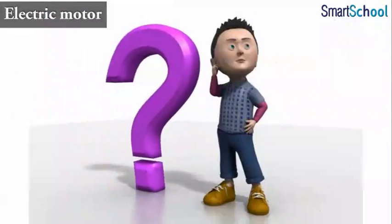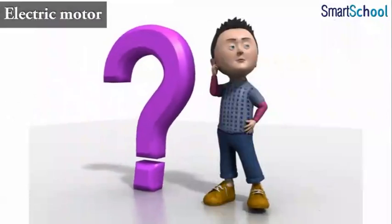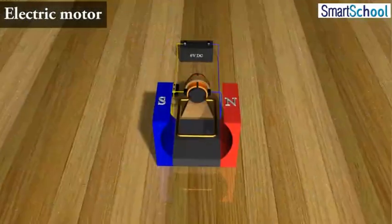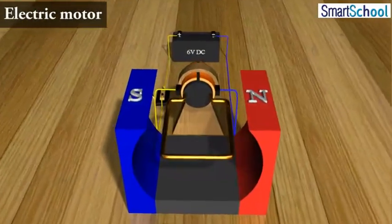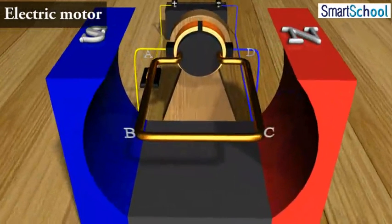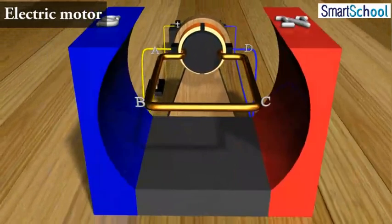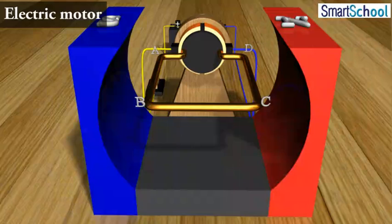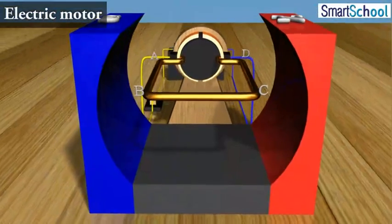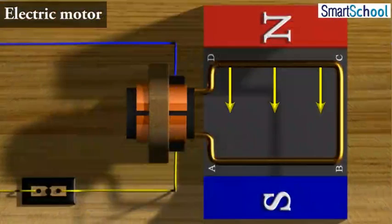Do you know how an electric motor works? An electric motor, as shown here, consists of a rectangular coil ABCD of insulated copper wire. The coil is placed between the two poles of a magnetic field such that the arms AB and CD are perpendicular to the direction of the magnetic field.